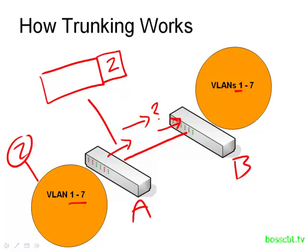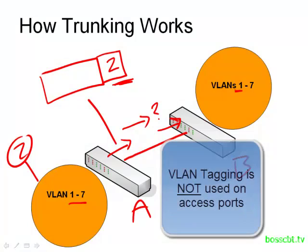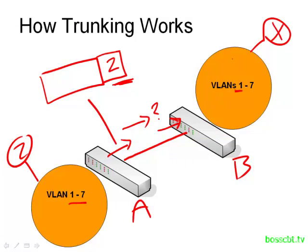When switch B receives that frame, it takes a look at the VLAN tag, sees the VLAN ID inside, and now it knows that frame belongs to VLAN number 2 — it knows where to send it. Keep in mind, VLAN tagging is only used on trunks; it's not used on access ports. If our destination is hanging off of an access port, when that frame is sent over that port, the tagging information is not on it. An access port can only belong to a single VLAN, so it doesn't need this identification — any frame going over it is assumed to be in that single VLAN. You will not find VLAN tags on access ports.